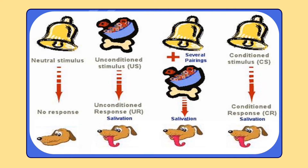He found that some saliva was produced in response to the sound of the bell alone. He then resumed pairing the bell and food, and tested again with the bell alone. As training continued, the amount of saliva produced to the bell alone increased. Thus, after training, the dog's mouth salivated whenever the bell was sounded. This is the conditioned response. The conditioned stimulus — the bell — becomes a substitute after pairing with the unconditioned stimulus — the food — and acquires the capacity to elicit a response.